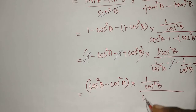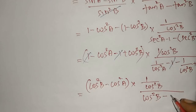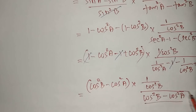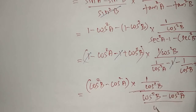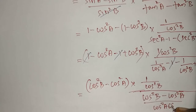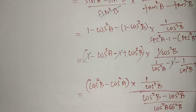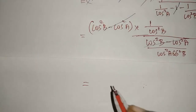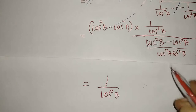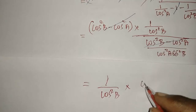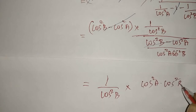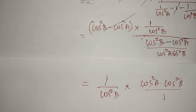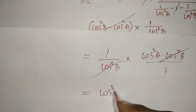Now the full expression is (cos²B - cos²A) multiplied by 1/cos²B, divided by (cos²B - cos²A)/(cos²A·cos²B). Bringing the denominator fraction up as reciprocal, the (cos²B - cos²A) terms cancel. The cos²B also cancels, and we are finally left with cos²A.